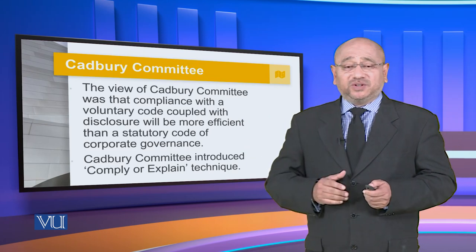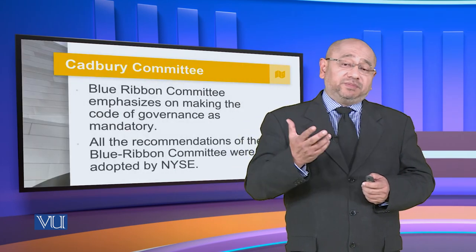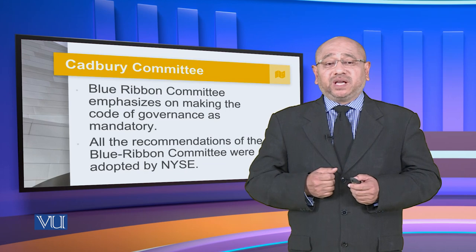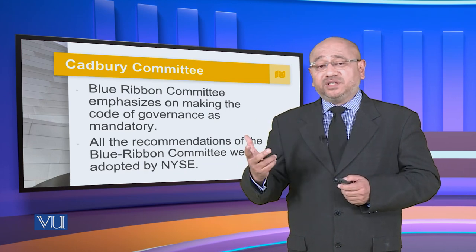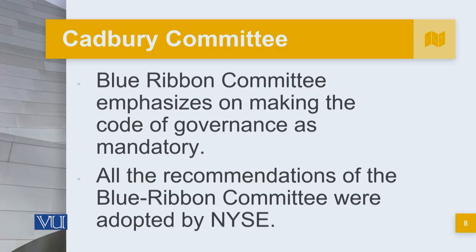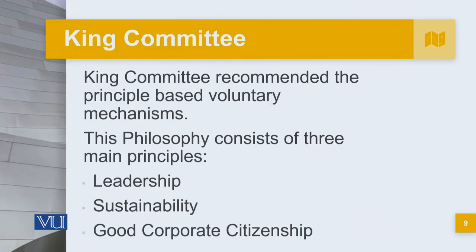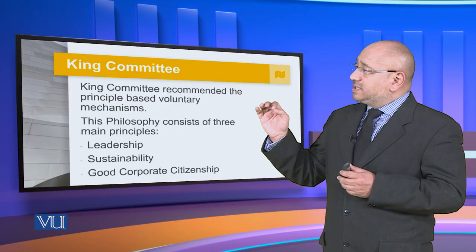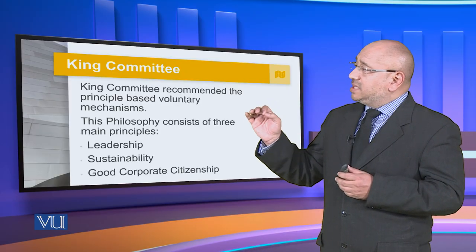According to the Blue Ribbon Committee, there is an emphasis on making the code of governance mandatory, and all recommendations of the Blue Ribbon Committee were adopted by the New York Stock Exchange. The King Committee, on the other hand, recommended principle-based voluntary mechanisms consisting of three principles: leadership, sustainability, and good corporate citizenship.